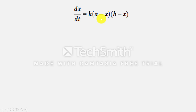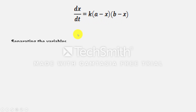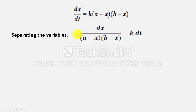Now we can separate the variables. That is, (A−x)(B−x) can be brought to one side and dt to the other side by cross multiplication. So on separating the variables, it will be dx / [(A−x)(B−x)] = k·dt.